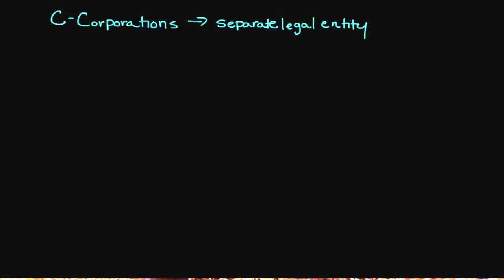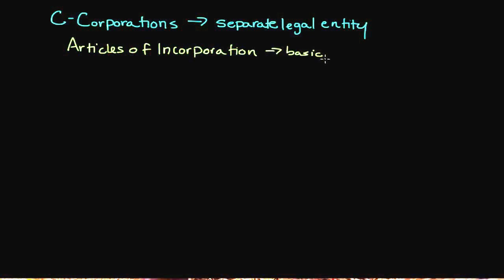In order to establish a C-corporation, the first thing you have to do is complete what we call Articles of Incorporation. This is usually filed in the state in which you want to be incorporated. So if you were going to be doing business predominantly in California, you might incorporate in California. Typically, Delaware is usually the most pro-corporate friendly state — they have a lot of laws that are pro-business — which is why you'll find that a lot of corporations are actually incorporated in Delaware.